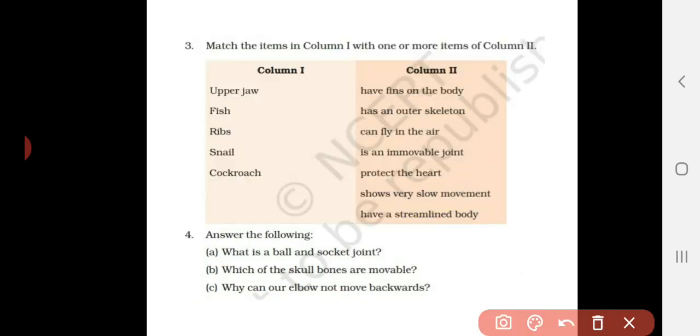Next it is match the following. Two columns are given here. I am reading out the first column: upper jaw, fish, ribs, snail, cockroach, and second column you have to match these two columns, okay? I am reading the options in second column. Have fins on the body, so it is related to fish.